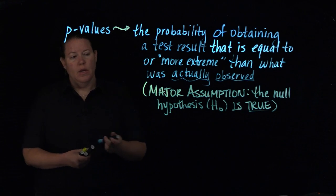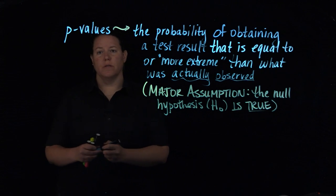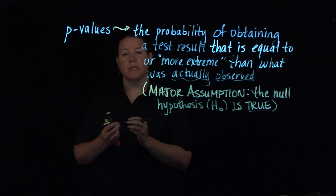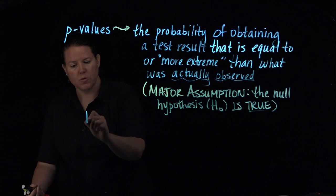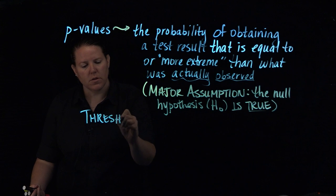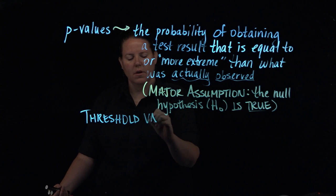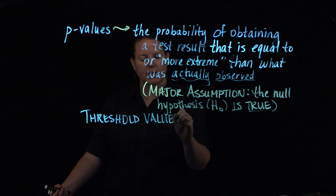In terms of how we measure p-values, we measure them against something else. That something else is basically a threshold value that we choose when we choose the null. So the threshold value is called the significance level of the test.